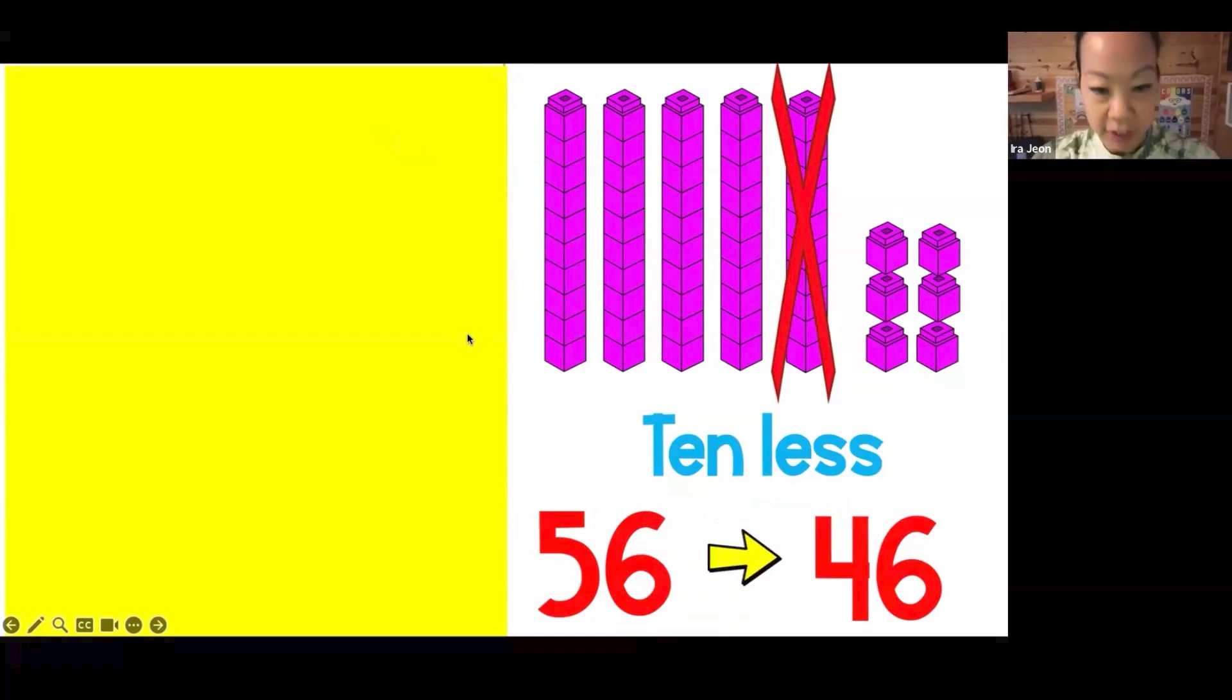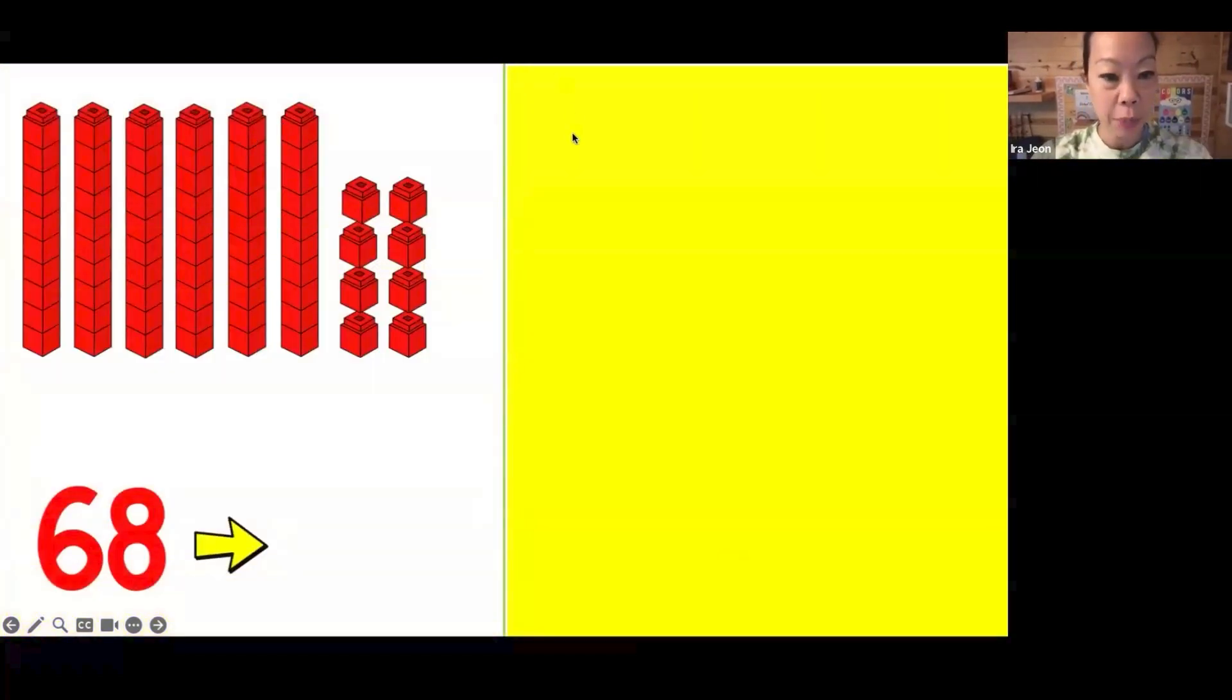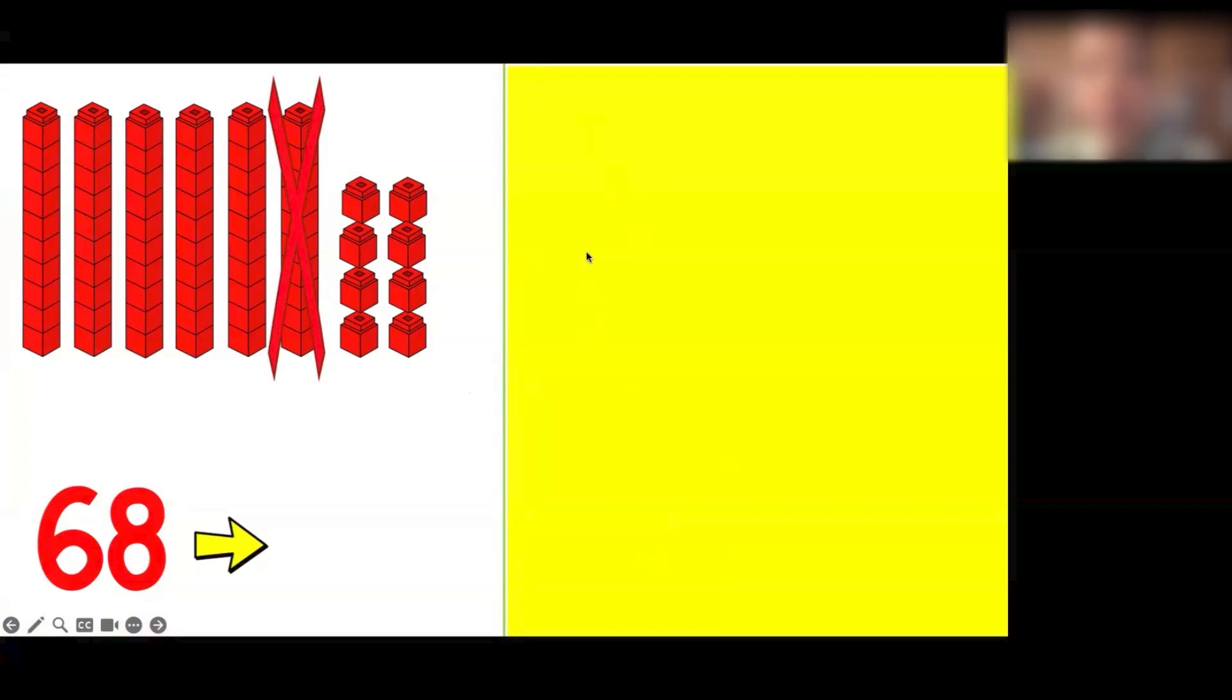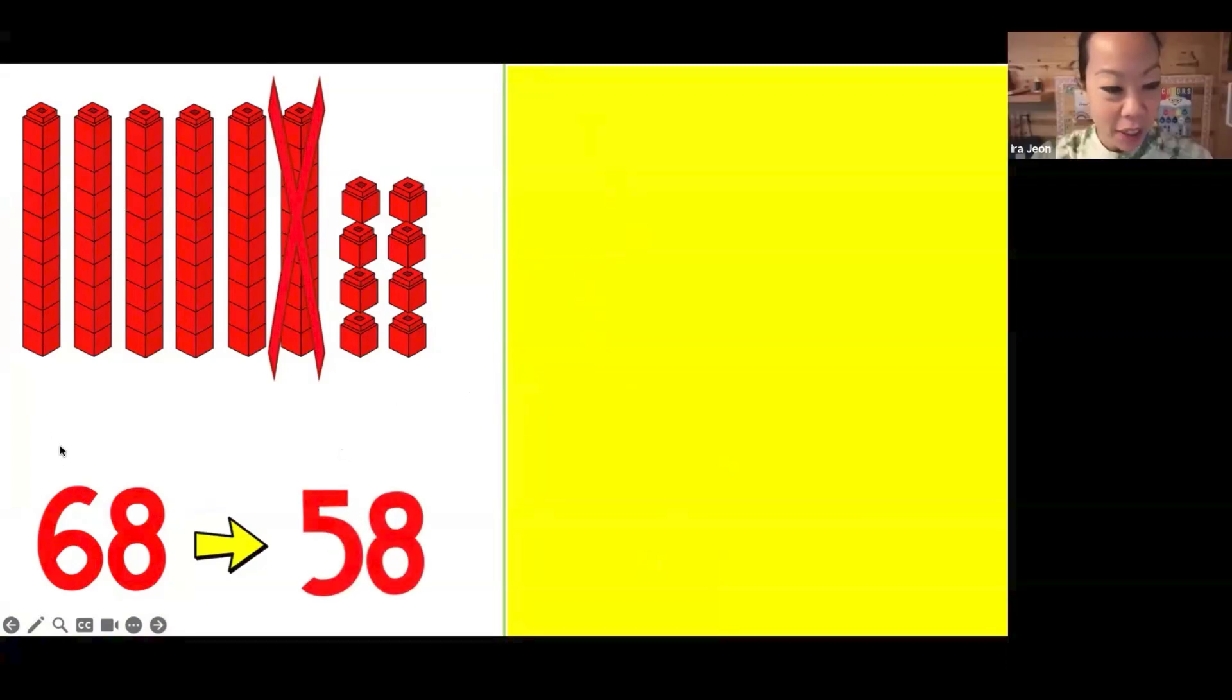Let's try a couple more with the place value blocks. Now I have 68 and I took 10 away, so what would be my new amount? Again, you can count the blocks or you can just take one away from the 10 spot. The one spot stays the same. Arish, what is our new number? 58. Very good. So look everyone, 6 changed to 5, one spot stayed the same.